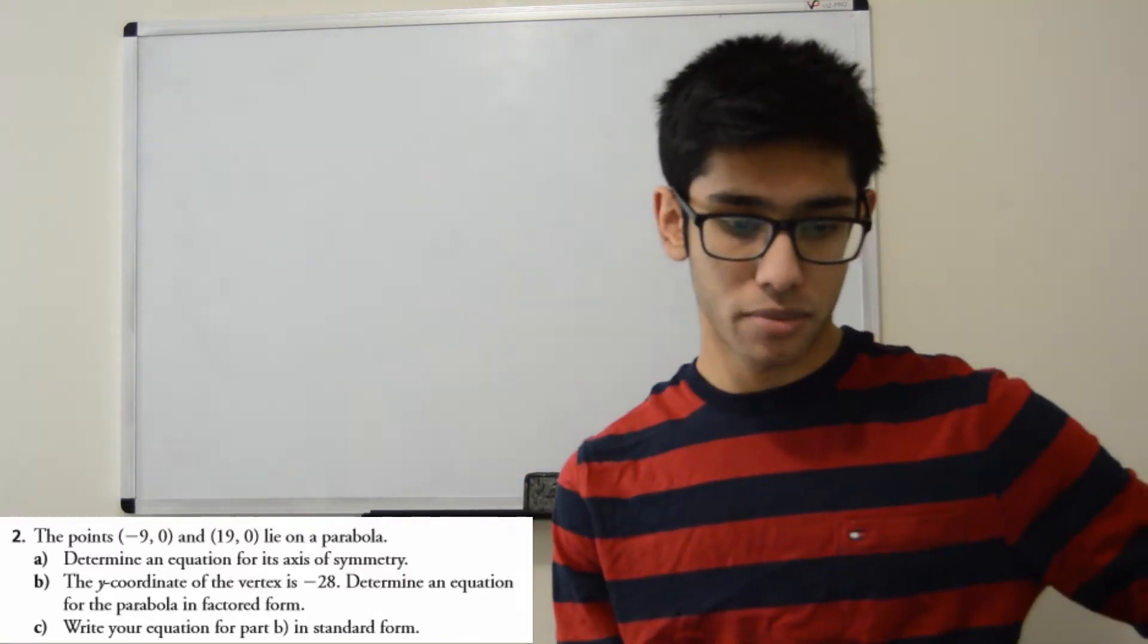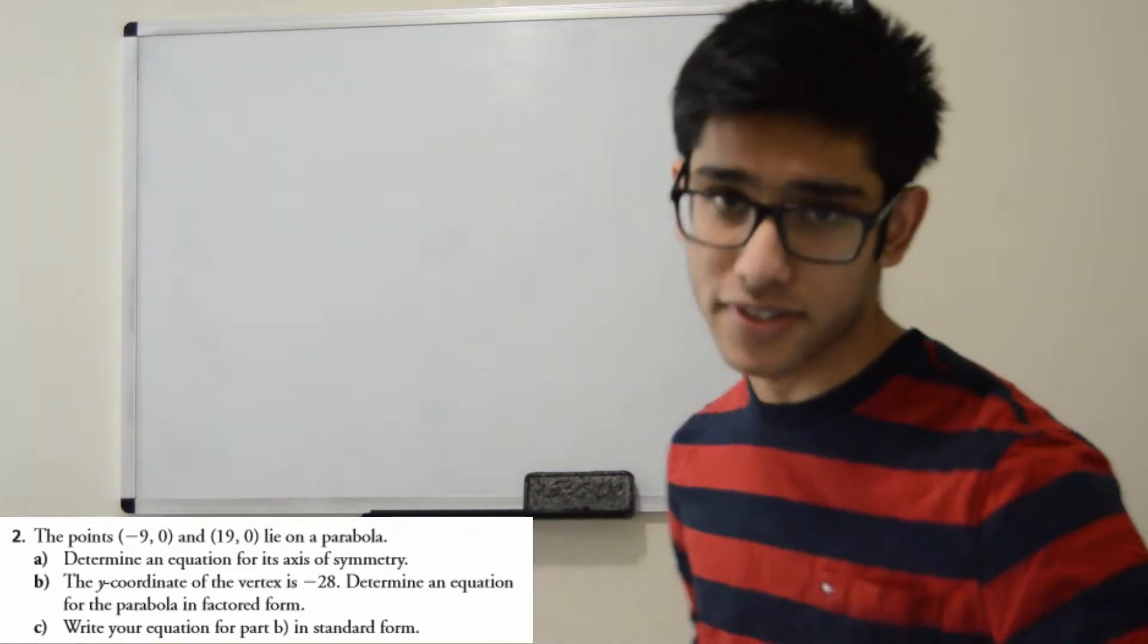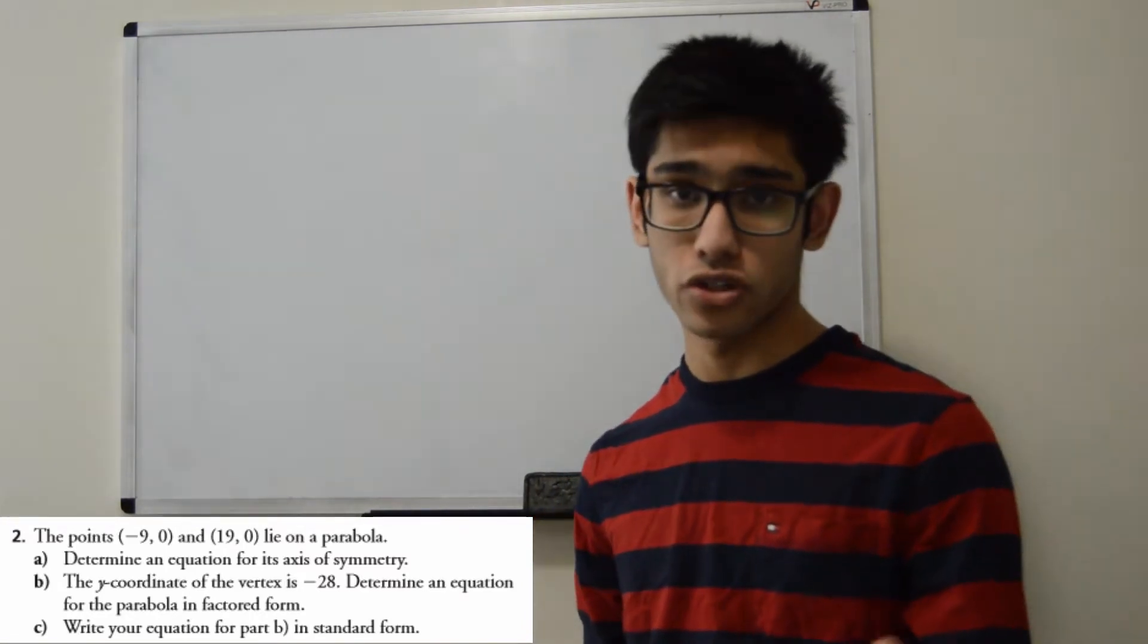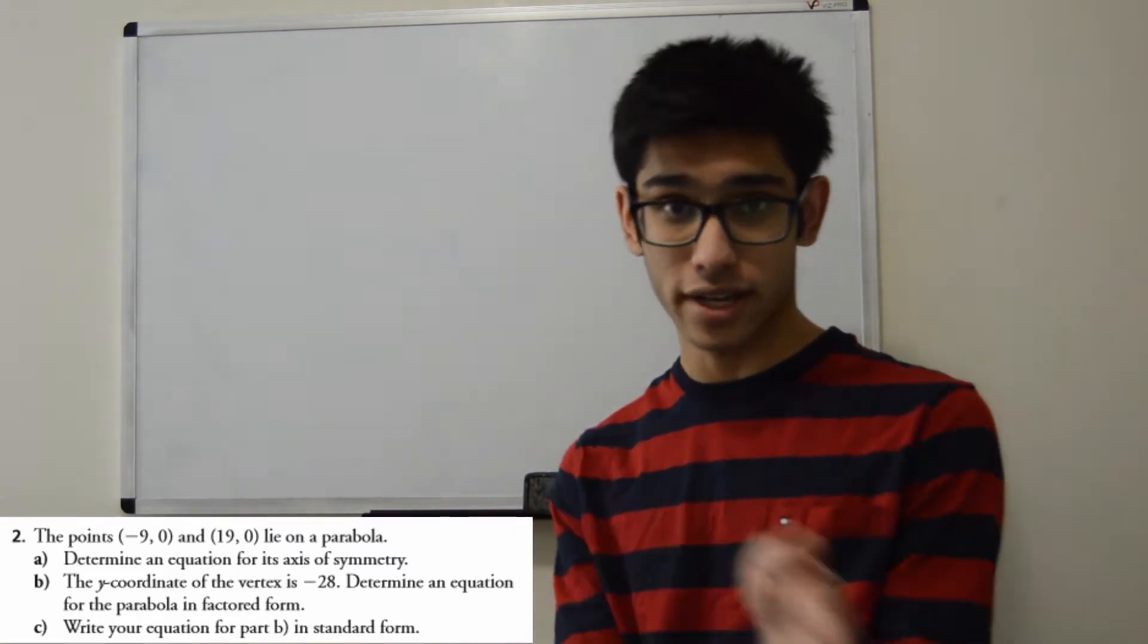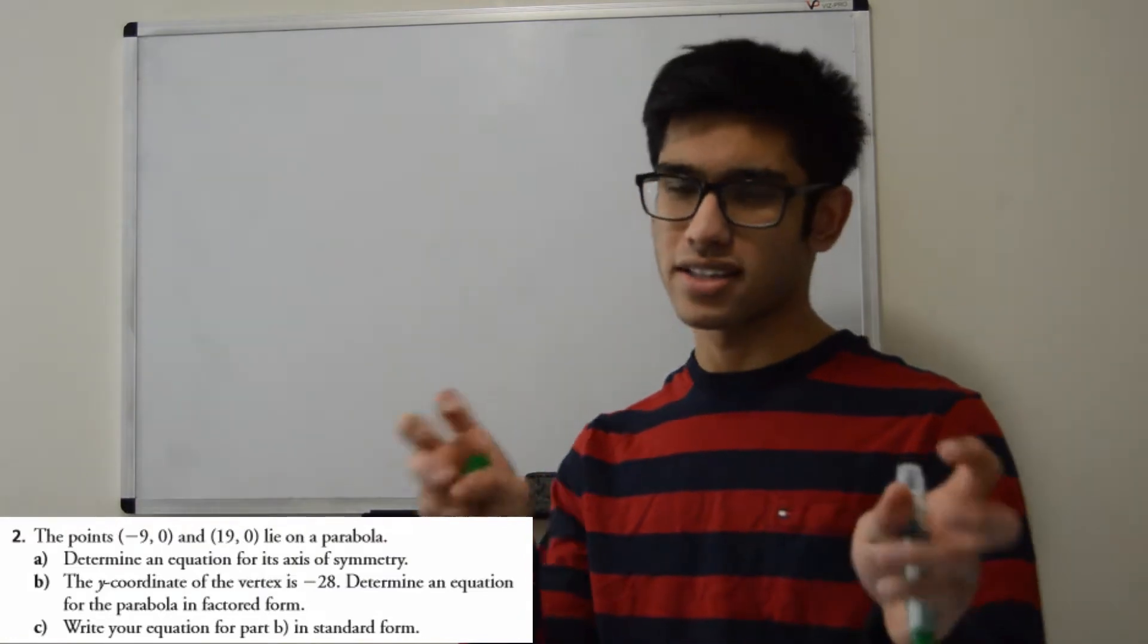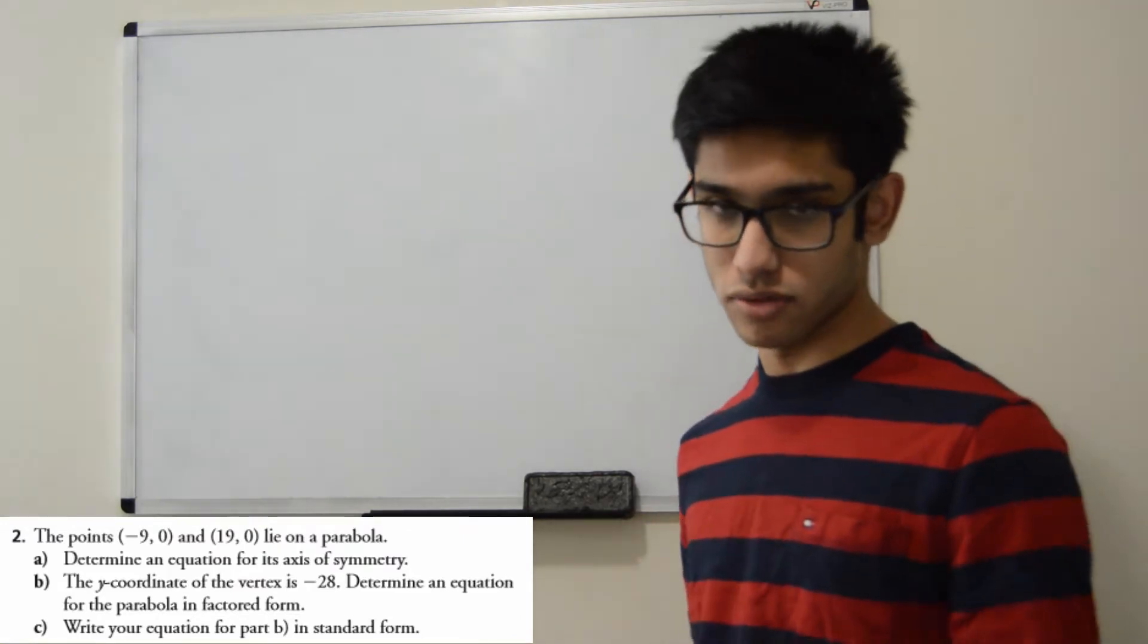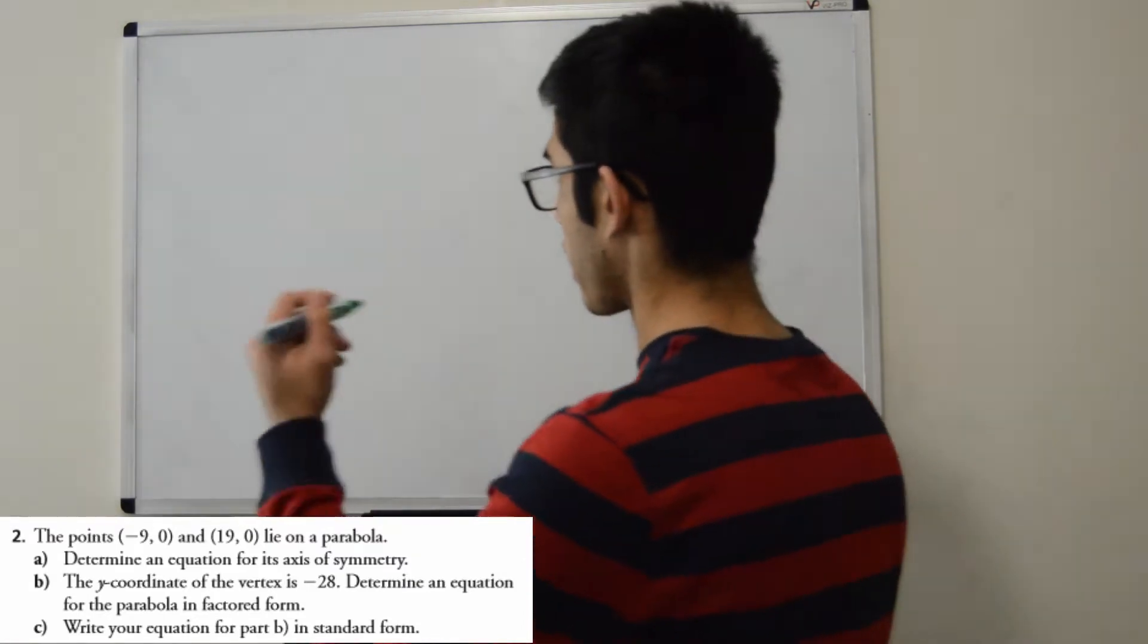So they want us to determine an equation for its axis of symmetry as our first line of action. So if you remember what the axis of symmetry is, it's basically the line that cuts the parabola in half and we actually have two points or two zeros that are on equal sides of the parabola, so they're exactly the same distance away from the vertex itself. So we use our midpoint formula or our axis of symmetry formula.